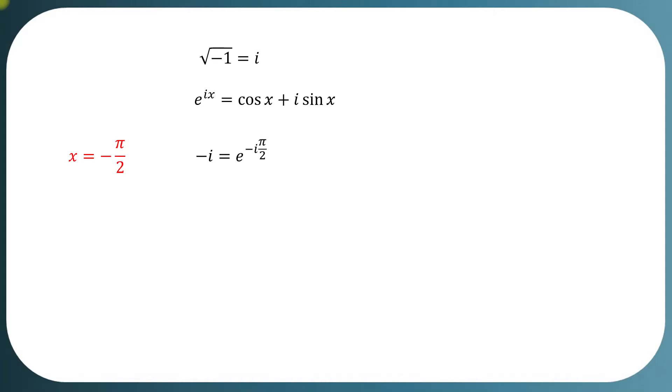Now raising the exponent by negative iota on both sides of the equation, we get E to the negative iota times pi by 2 to the negative iota. Now we can multiply these exponents and we get E to the iota squared times pi by 2.